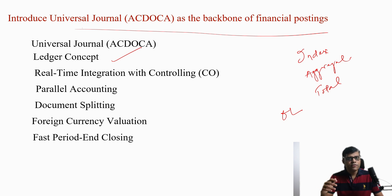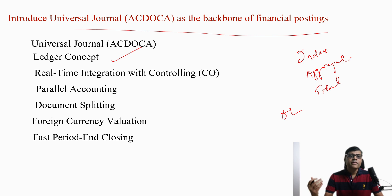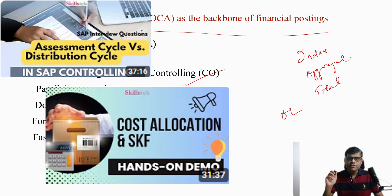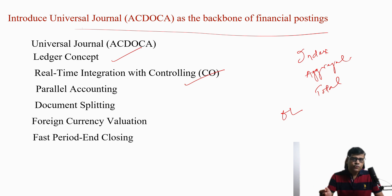I already have videos on the extension ledger — you can check that. The next benefit is real-time integration with controlling. No reconciliation is needed between FI and CO, because both use the same ACDOCA table. That is another key benefit.